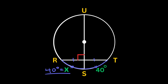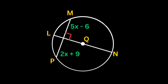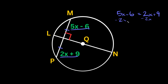So we've solved for x there. In the next problem, the diameter LN and a chord again create a 90-degree angle, meaning both sides of the chord are equal. Setting them equal: 5x minus 6 equals 2x plus 9. Solving gives 3x equals 15, so x equals 5.